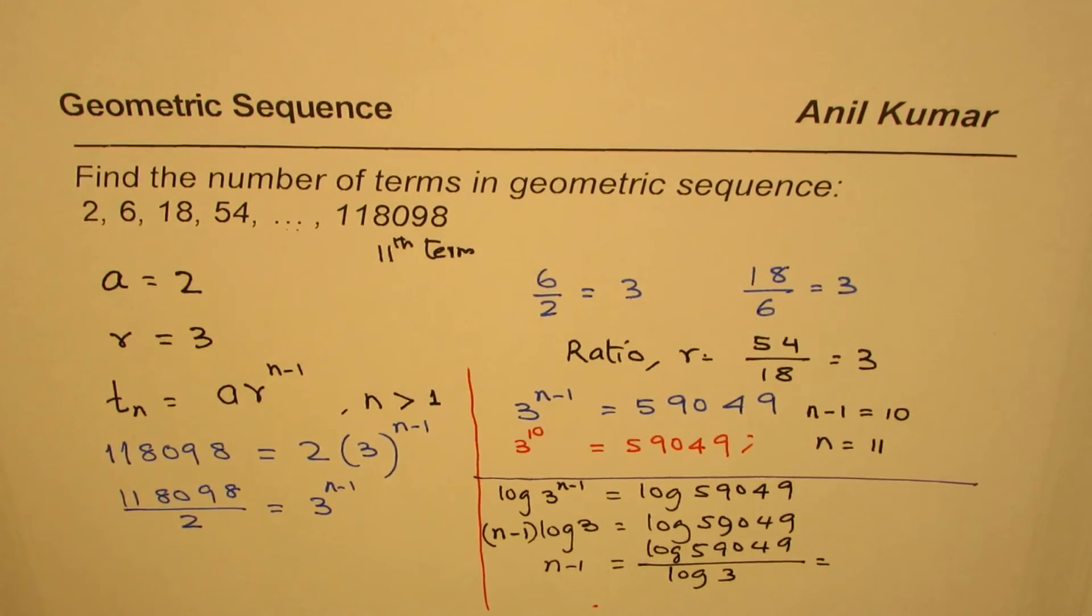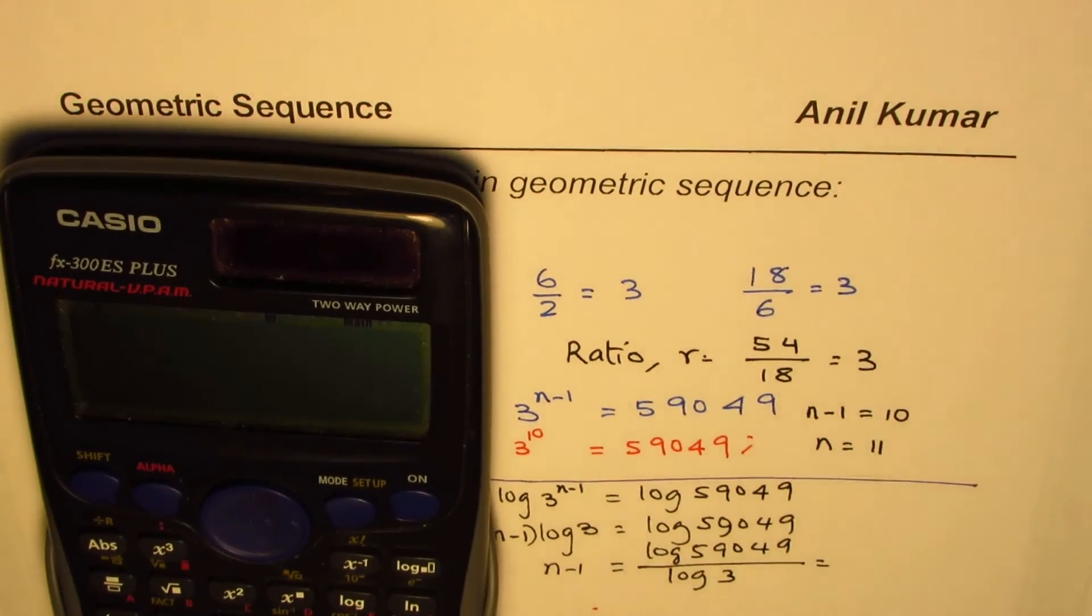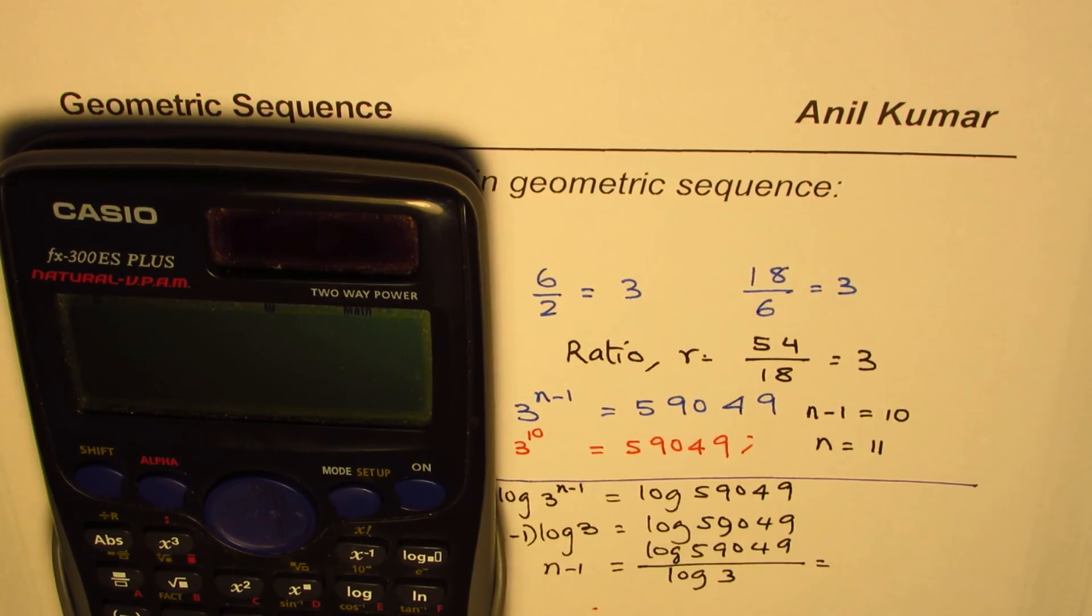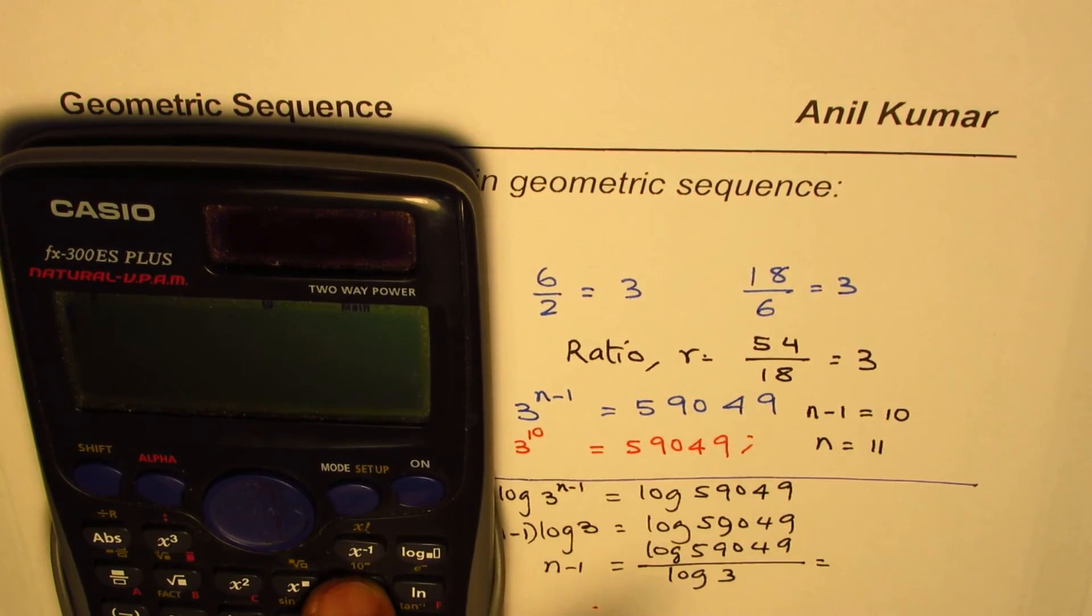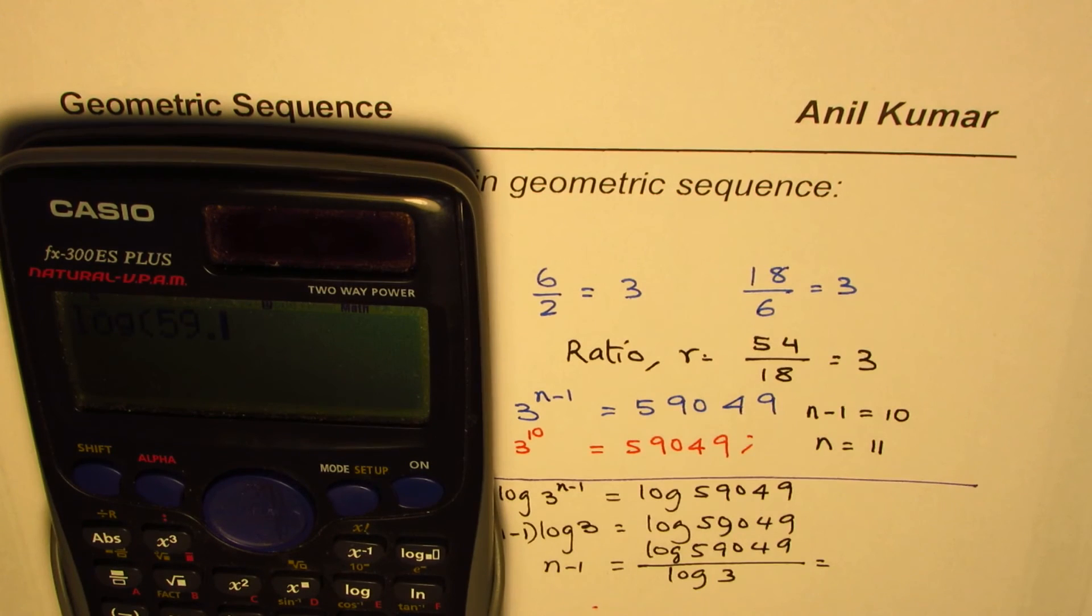So you could do log of, so let's use the log function which in our case is here. So we have log base 10, so I'll use this function log of 59049, so that number let's calculate this, divided by log of 3, log of 3.